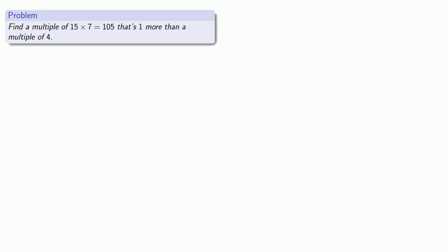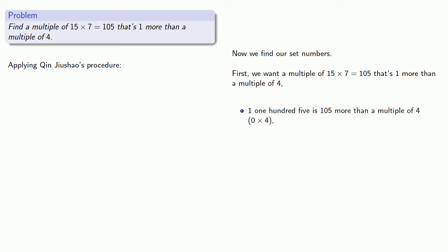Now we find our set numbers. First we want to find a multiple of 15 times 7, 105, that's 1 more than a multiple of 4. Applying Change of Shows Procedure, we begin by noting that 1×105 is 105 more than a multiple of 4, namely 0 times 4, and 0×105s is 4 less than a multiple of 4, namely 1 times 4.